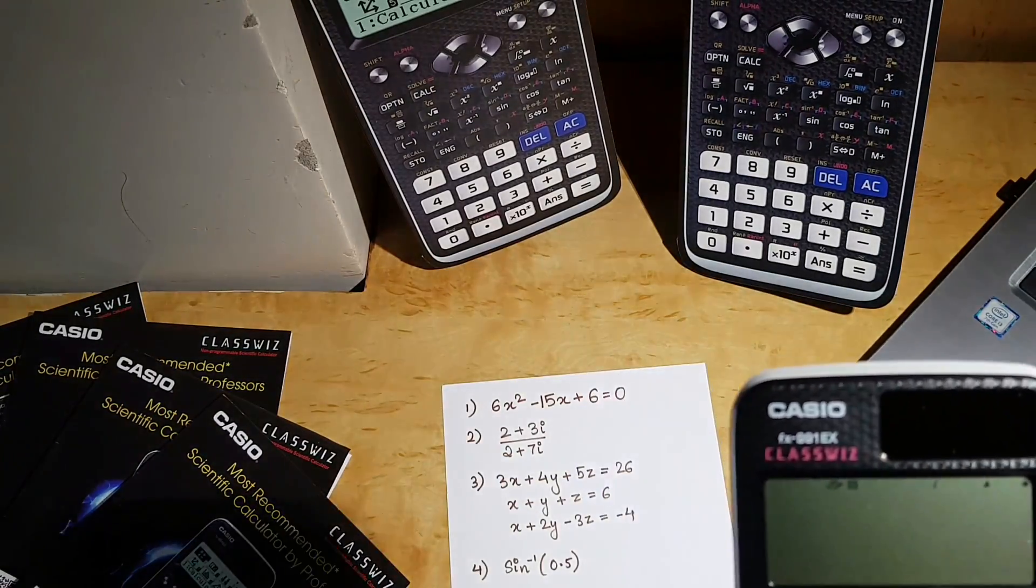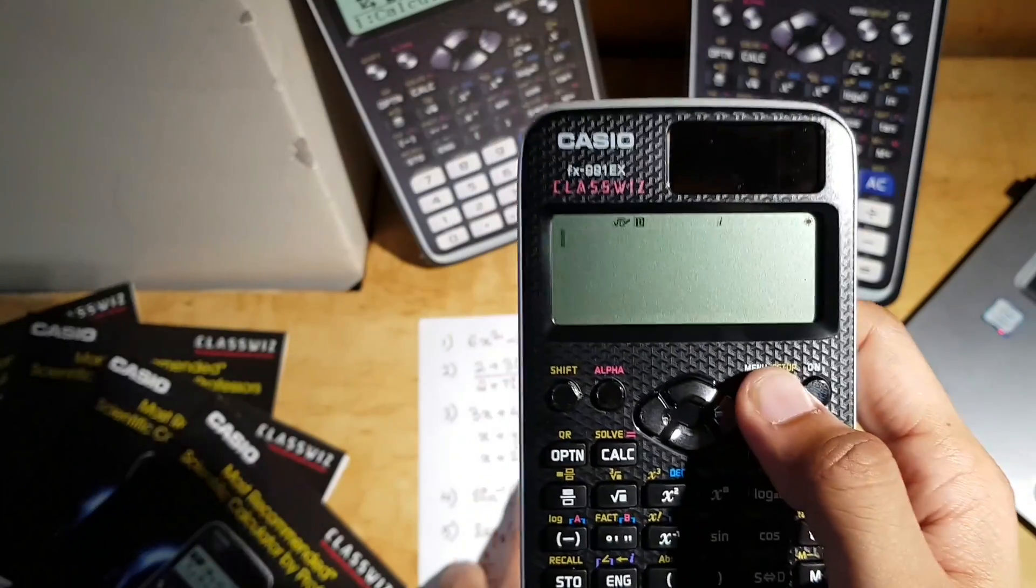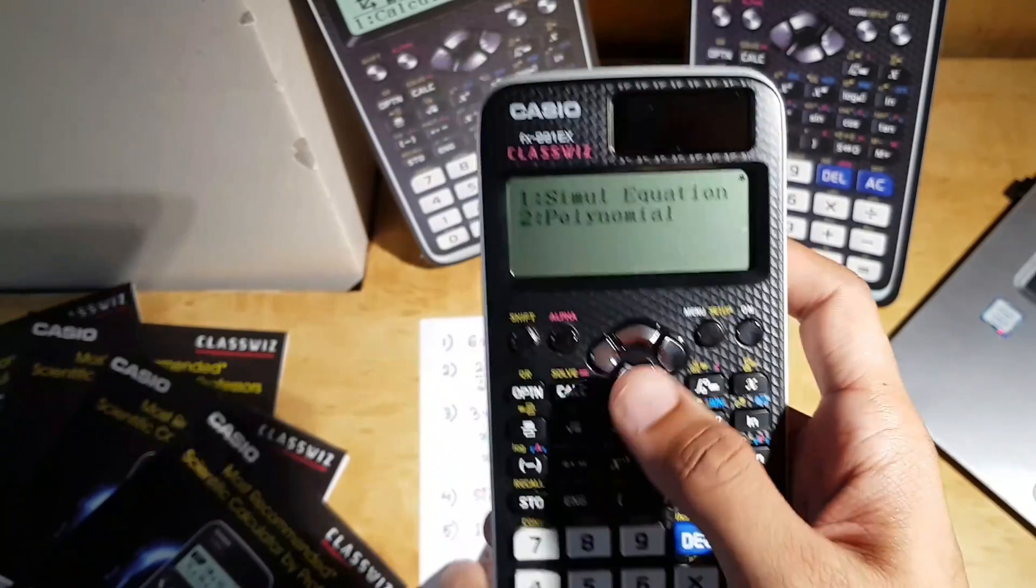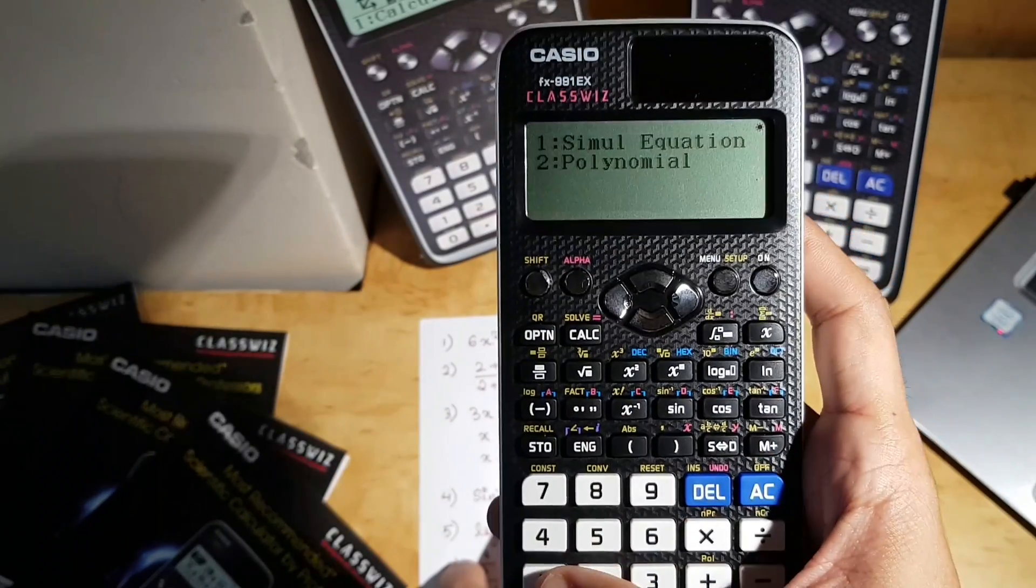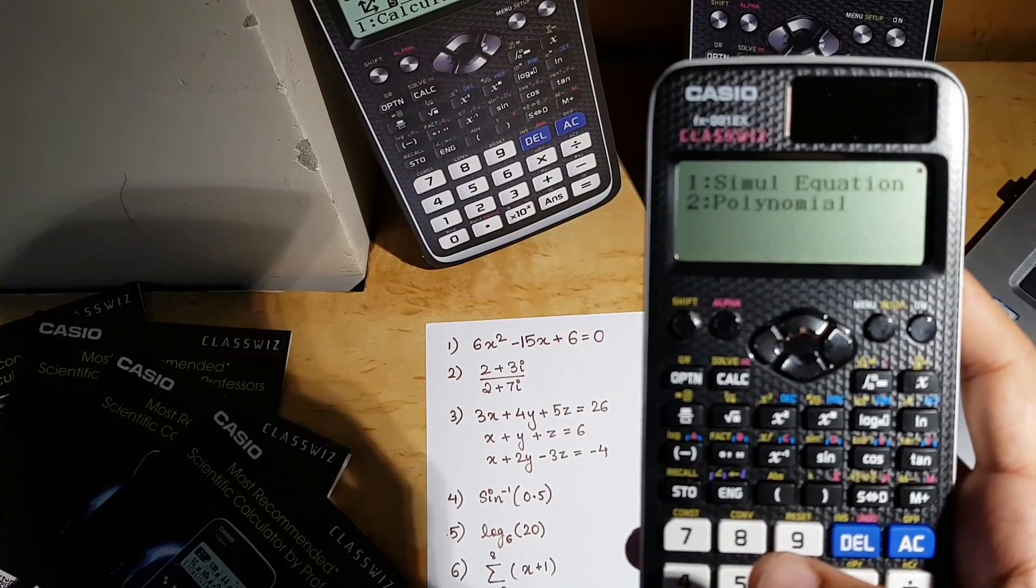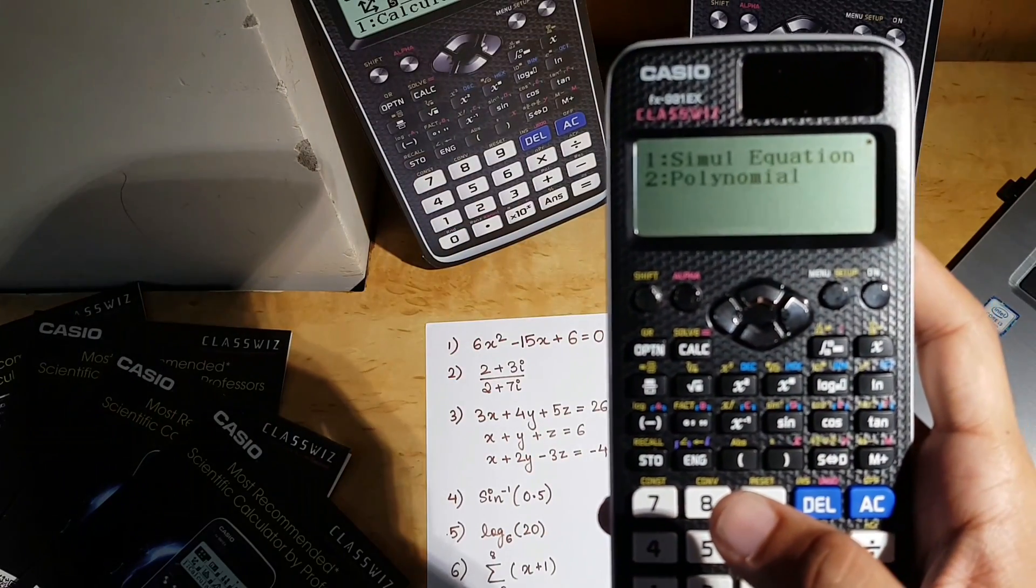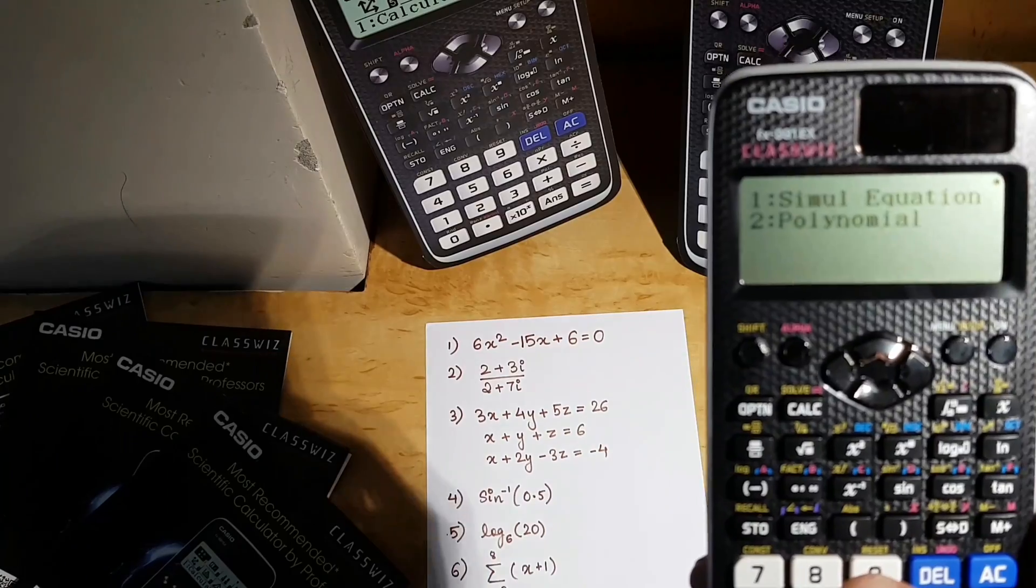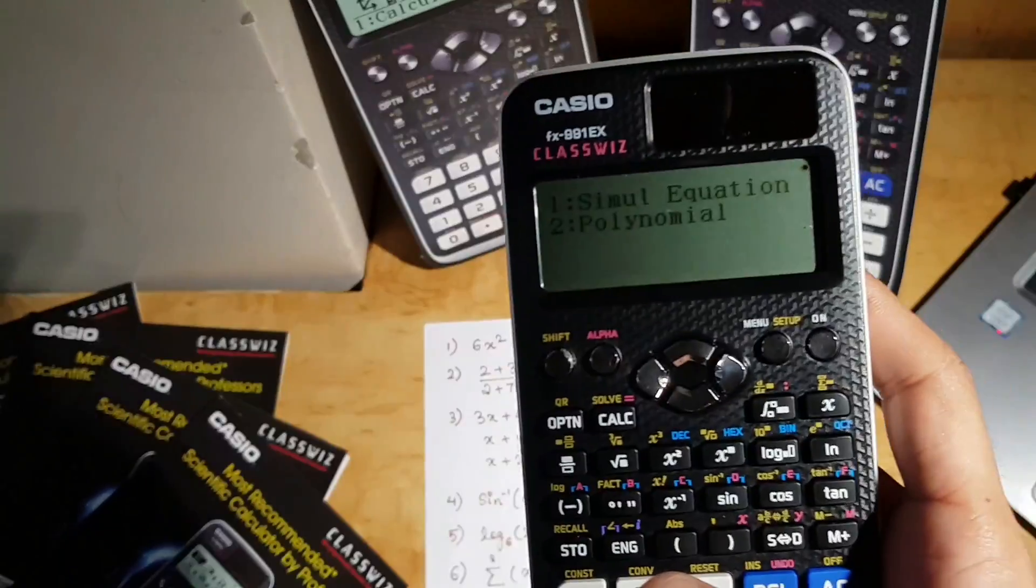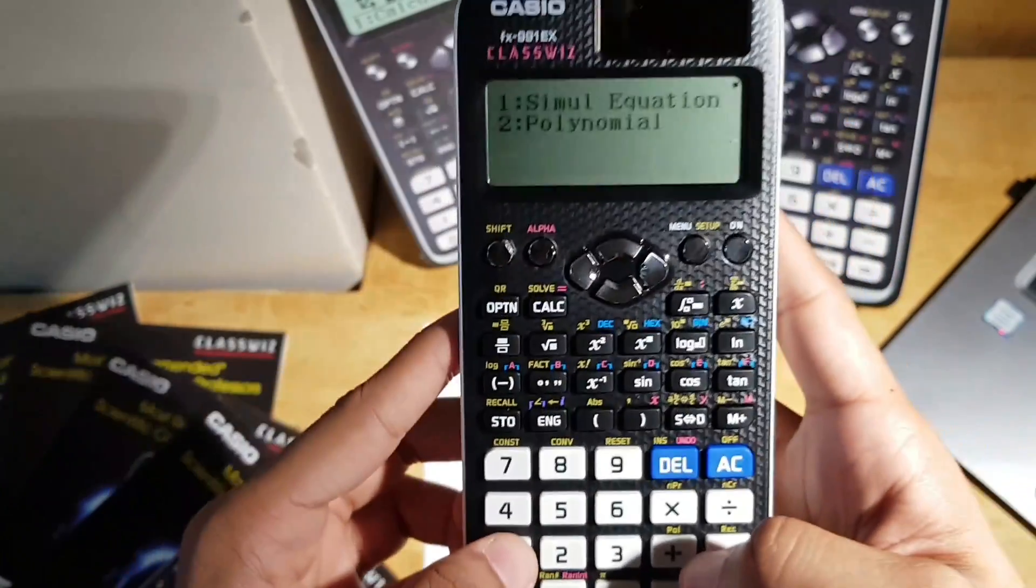Now again, to find the solution of three linear equations, we are going back to equation and function, enter, and then simultaneous equation, the first option. As you can see, because the LCD is very sharp and multi-line displays there, all the words are clearly visible. In the previous versions of the old calculator, you would find short forms of these stuff, but here there is no short form. I'm going to select option 1.